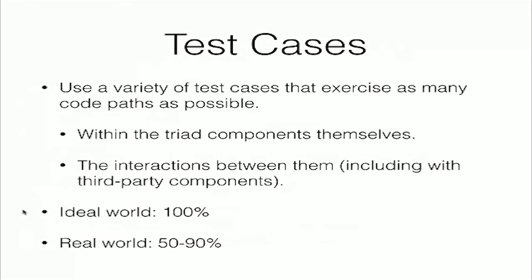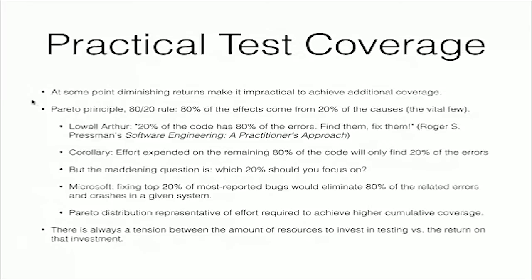In the ideal world we want to test 100% of everything, but in the real world that's just not practical. You're probably going to achieve 50 to 90%; if you're achieving 95% or better, that's really good. At some point diminishing returns make it impractical to achieve additional coverage. The Pareto principle, or the 80-20 rule, says 80% of the effects come from 20% of the causes — the vital few. Lowell Arthur says 20% of the code has 80% of the errors. A corollary is that effort expended on the remaining 80% of the code will only find 20% of the errors.